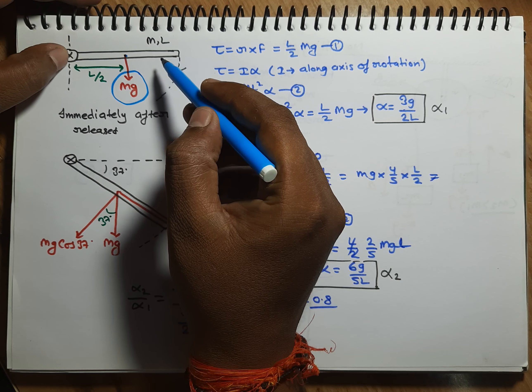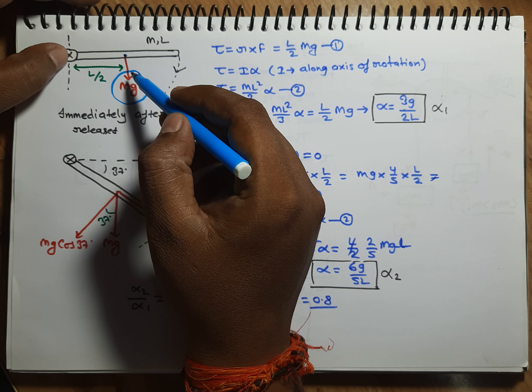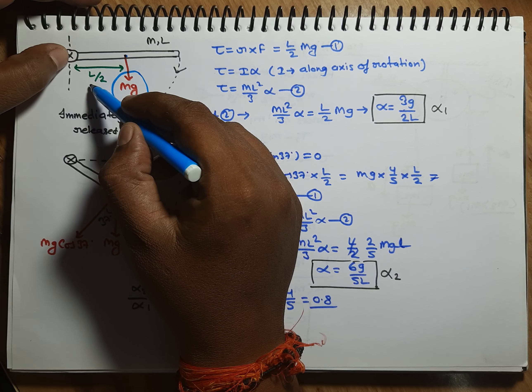All right friends, because it's uniform rod, where is the center of mass? It's half length. How much? L by 2.